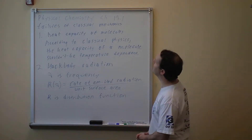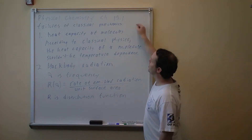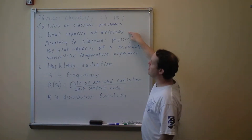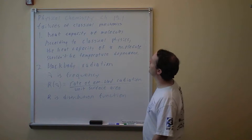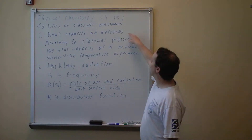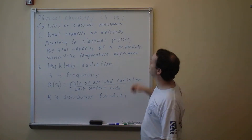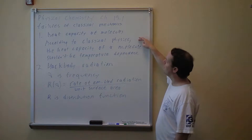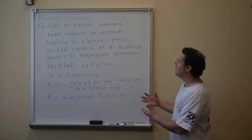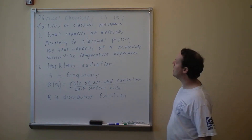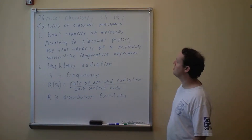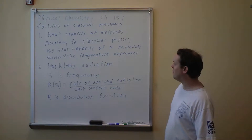Continuing on Physical Chemistry, Chapter 18, Section 1 — we're talking about the failures of classical mechanics. There are at least two of them. This is the 1900s, when scientists were realizing that classical mechanics was not quite working. One failure is the heat capacity of molecules — they don't come out right. According to classical physics, the heat capacity of a molecule has no reason to be temperature dependent; at any temperature the molecules should be able to store energy in the appropriate degrees of freedom. But we're going to show that heat capacity is actually dependent on temperature, and we're going to show how quantum mechanics explains why.